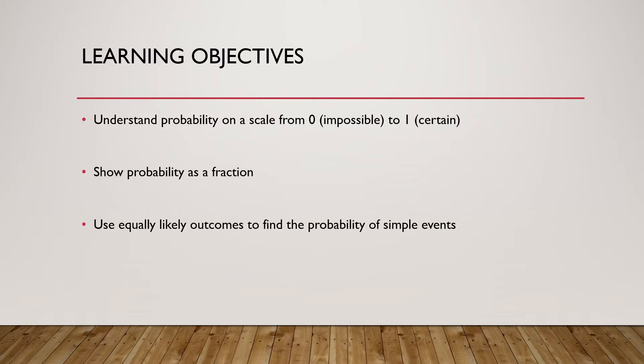The learning objectives according to NXCL for this are understanding probability on a scale from zero to one, show probability as a fraction, and use equally likely outcomes to find the probability of single events.